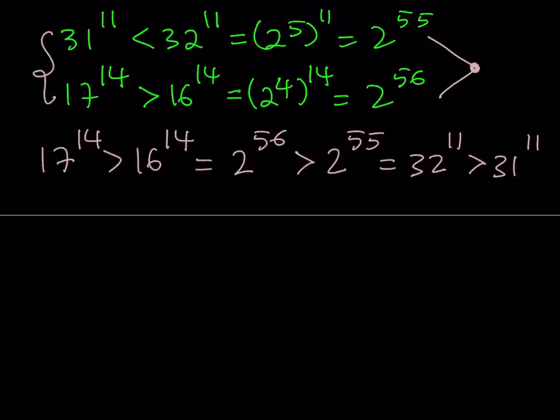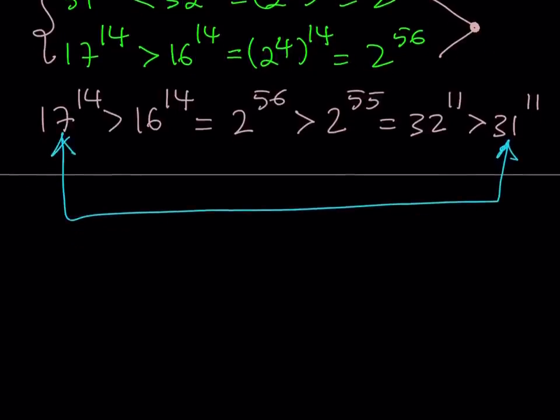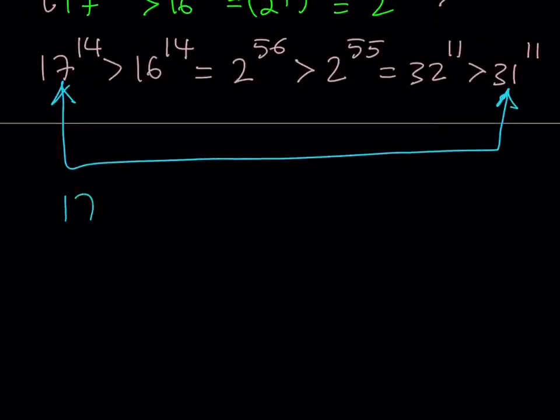Now, what is this supposed to mean? It means that we can forget about everything in the middle and write this as this number being greater than that number. Using the transitive property, we can safely say that 17 to the 14th power is greater than 31 to the 11th power. Now make sure to look at the other solution methods and finish them up so that you can verify this result for yourself. So this is our result. But let's go ahead and take a look at what those values look like.